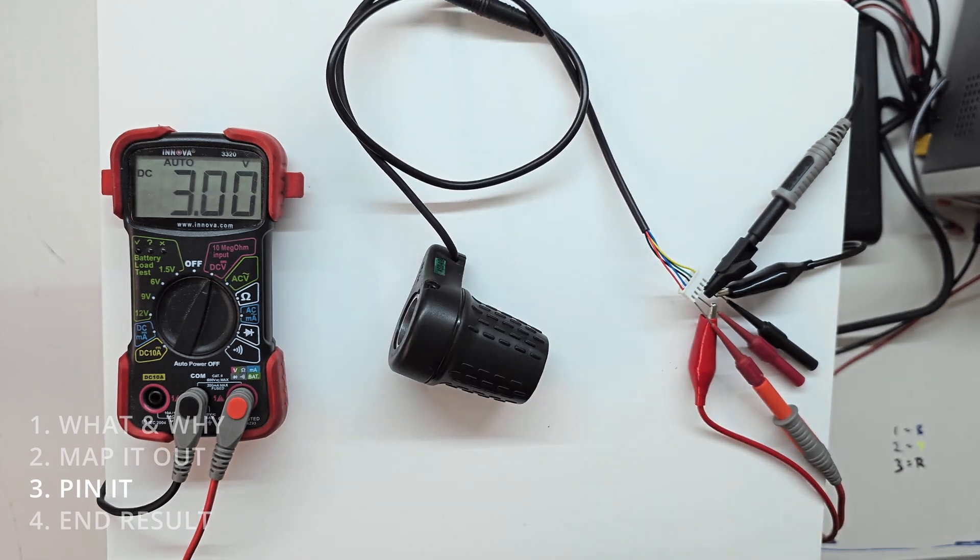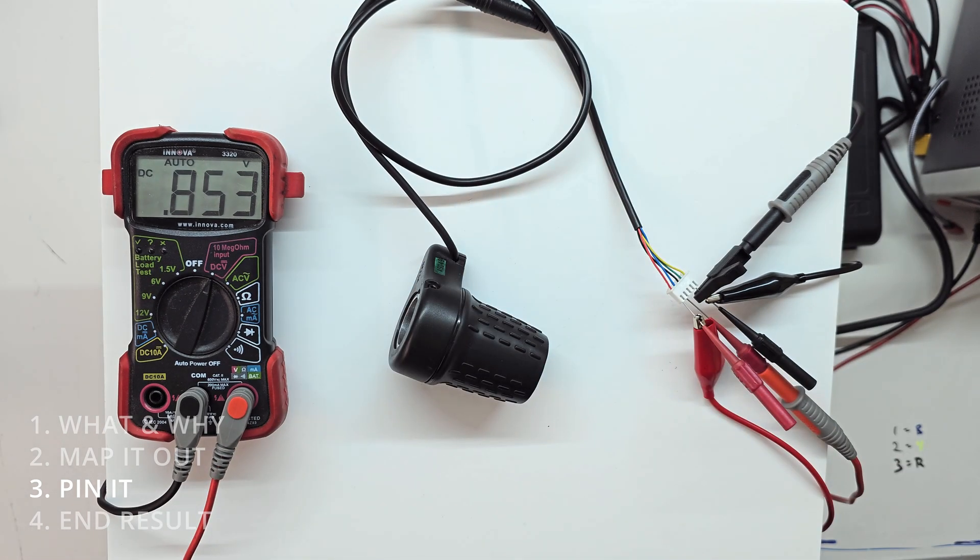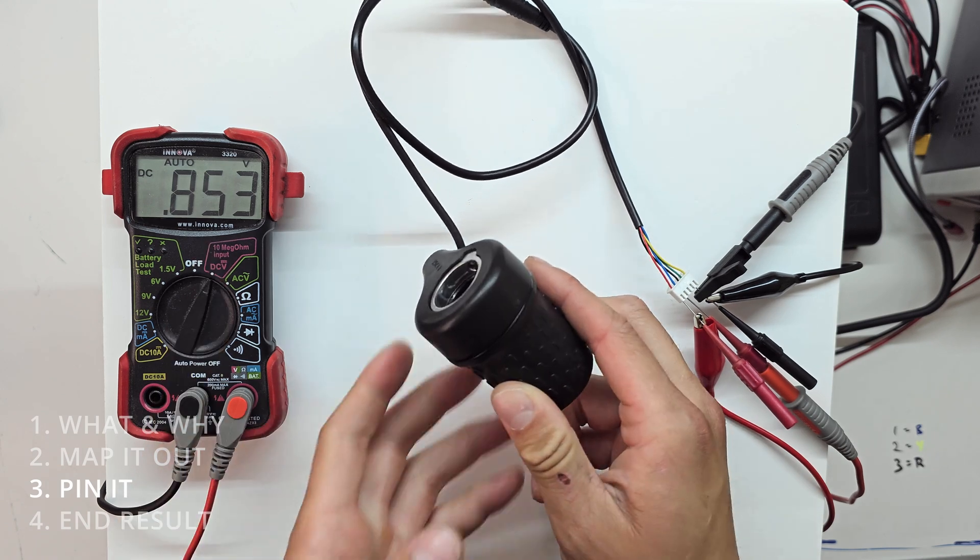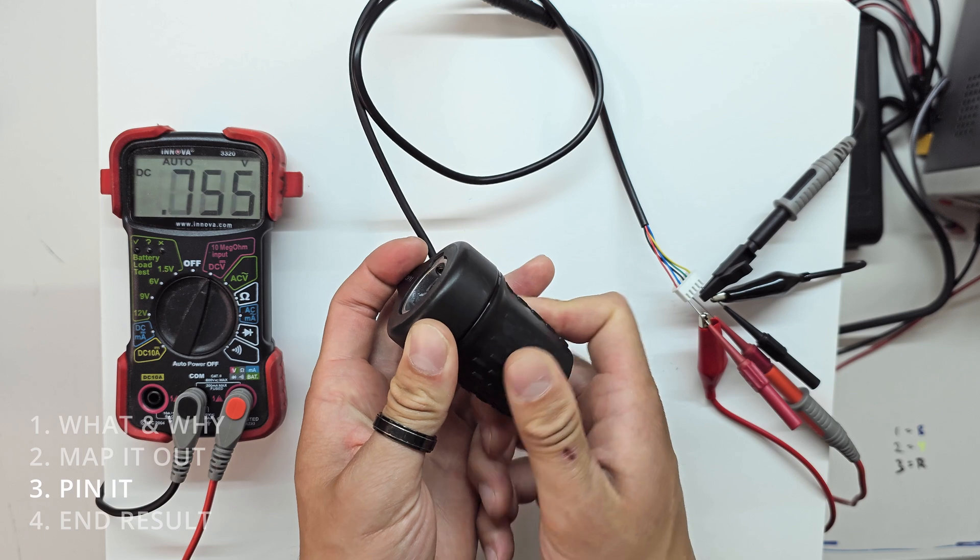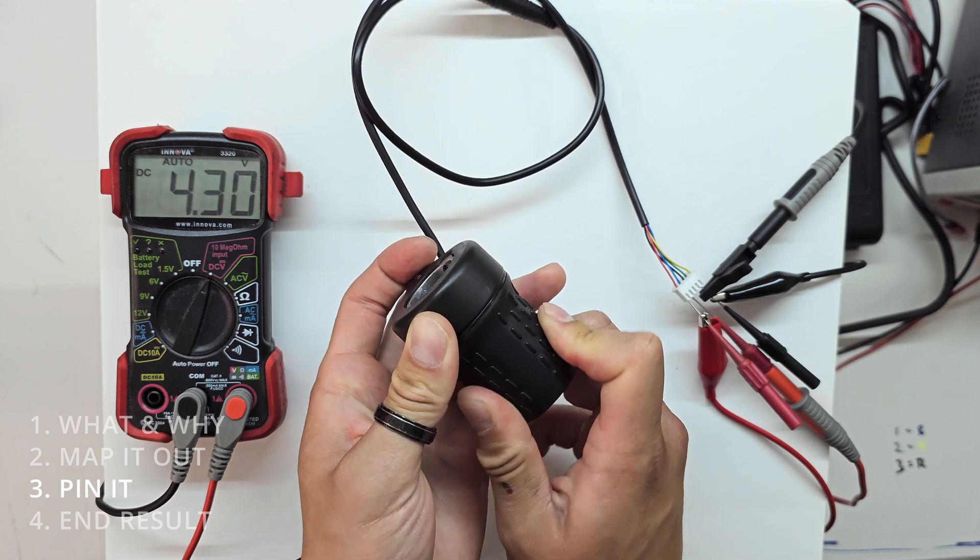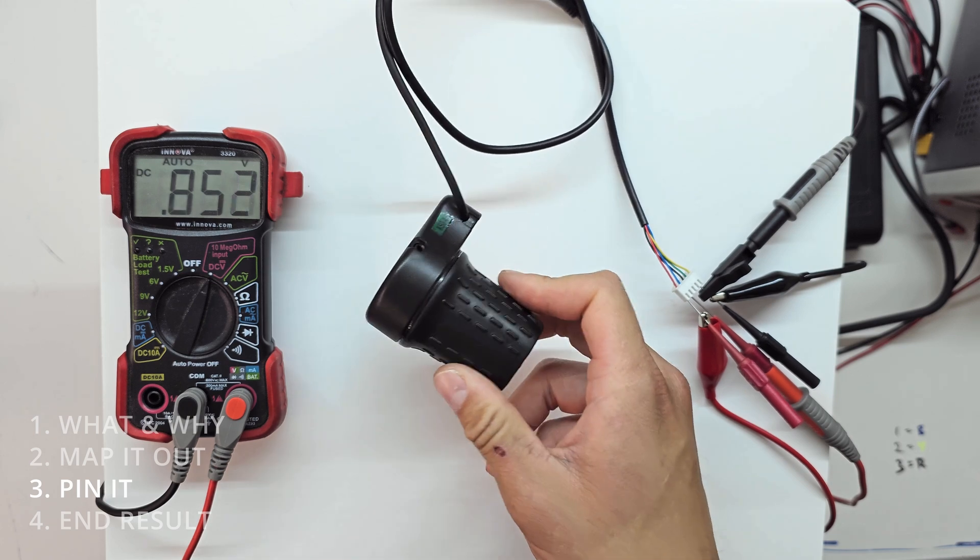So what that means is we got the pins wrong. So we'll just switch them real quick. Okay, make sure nothing's touching again. And now let's look at our multimeter. When we twist the throttle, we're actually getting a throttle reading.